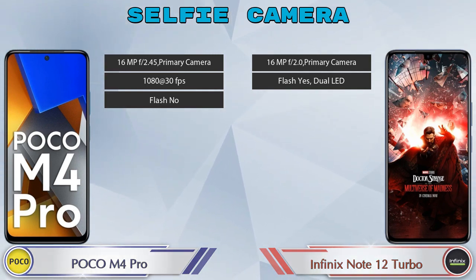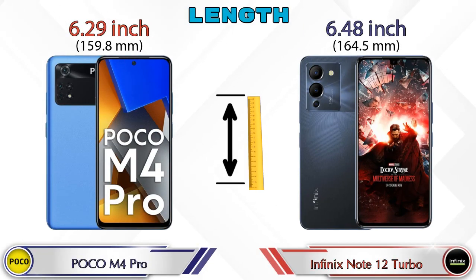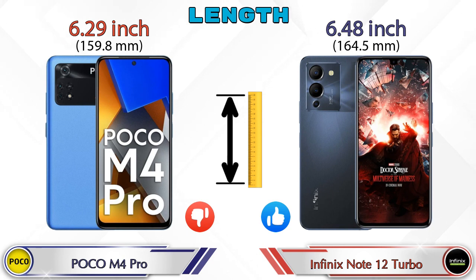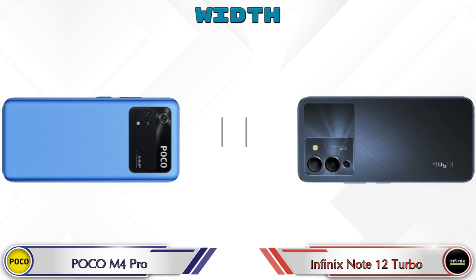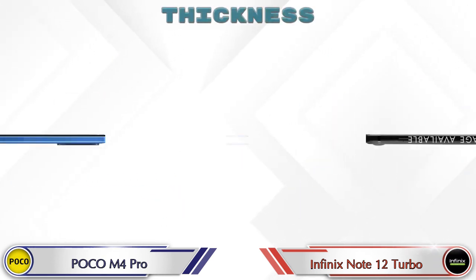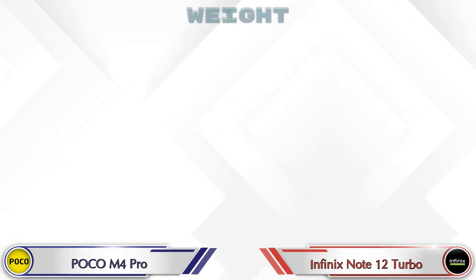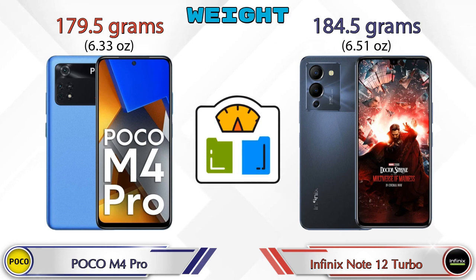Now let's check the dimensions. Poco M4 Pro has a length of 6.29 inches and Note 12 Turbo is 6.48 inches. Width: Poco M4 Pro is 2.91 inches and Note 12 Turbo is 3.02 inches. Both phones have the same thickness of 0.31 inches.